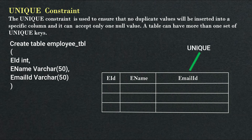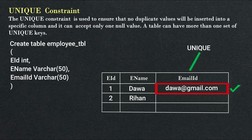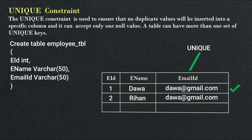Now we insert values into this table. Let's insert a value in the first row: employee_id 1, employee_name 'Dawa', email_id 'dawa@gmail.com'. This value will be inserted into the table. But if we insert a value in the second row — employee_id 2, employee_name 'Rehan' — and we input the same email_id 'dawa@gmail.com' without changing anything, this value will NOT be inserted into the table. Why? Because we have set a unique key constraint on the email_id column, so we cannot enter a duplicate value in this column.